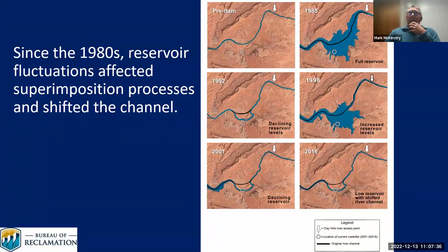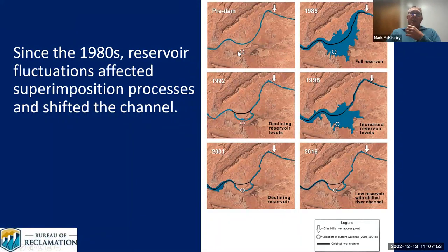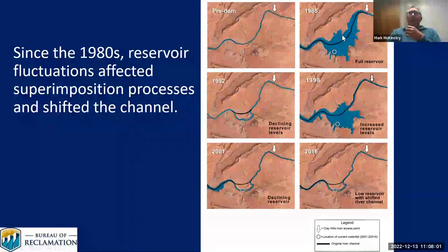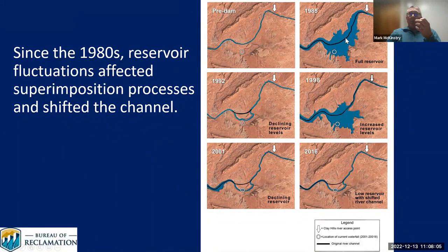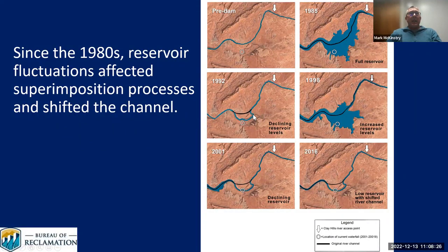Let's talk about how this waterfall formed — it's a feature that's actually happening in some other places as well. The original river prior to closure of the dam in 1963 is shown here. The circle in all the pictures marks the location of the current waterfall. The lake filled up after completion in 1963, backing all the way up by 1983 and flooding this entire area. By 1992 it receded downstream of this location, and in 1998 the reservoir filled back up.